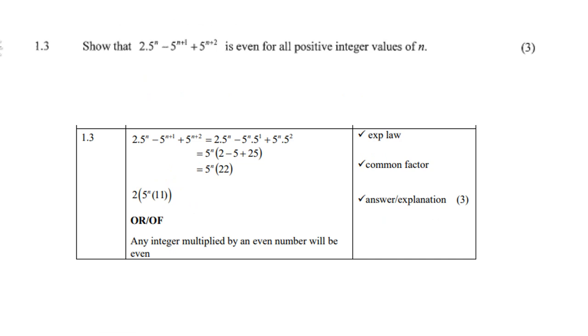1.3: Show that 2 × 5^n - 5^(n+1) + 5^(n+2) is even for all positive integers of n. So what we do is we first split the middle term 5^(n+1) into 5^n times 5^1. Do the same with 5^(n+2): split it into 5^n times 5².